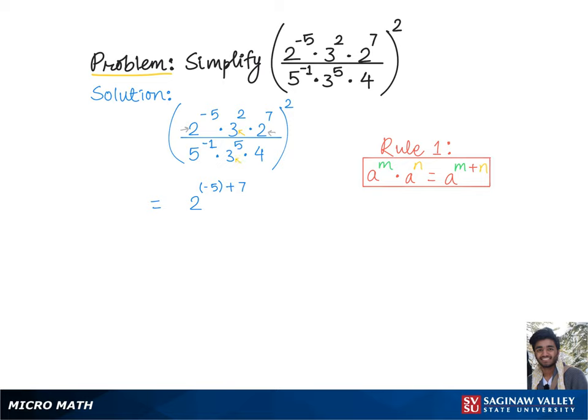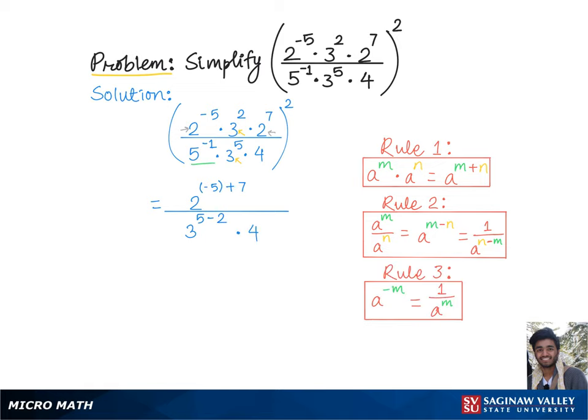The exponents with common base 3 in the form of a quotient get combined according to Rule 2, giving 3 raised to 5 minus 2. The exponent 5^(-1) in the denominator becomes 5^1 in the numerator according to Rule 3, with the whole expression squared.